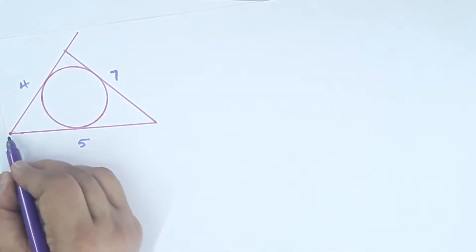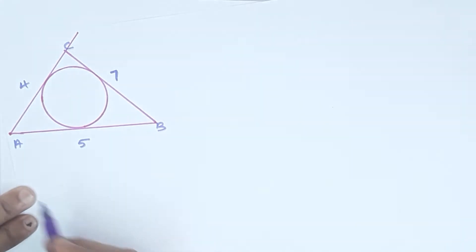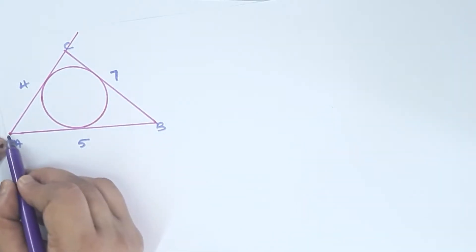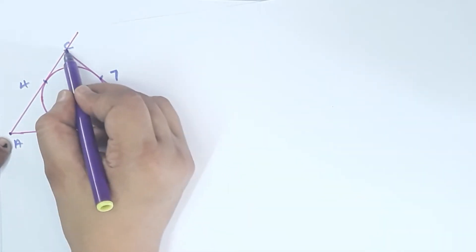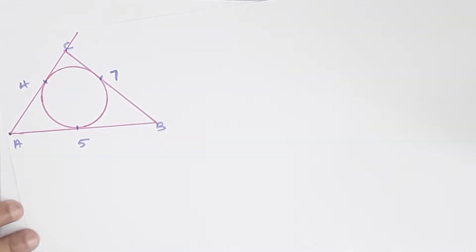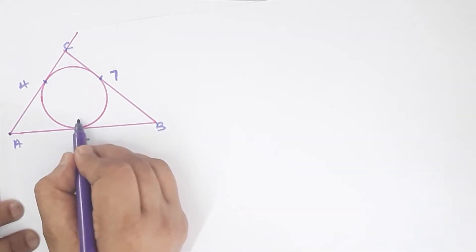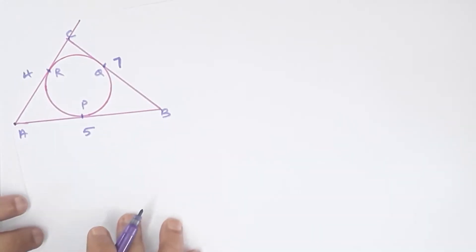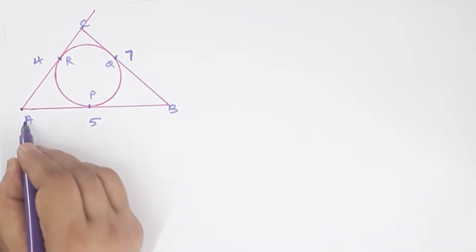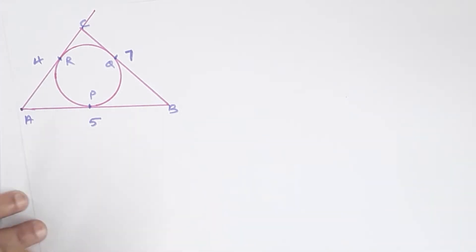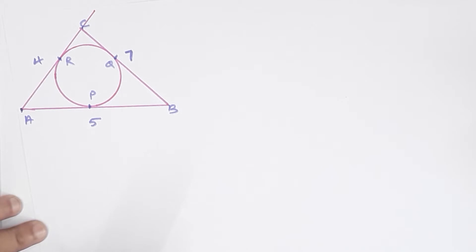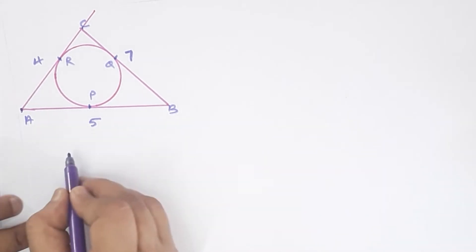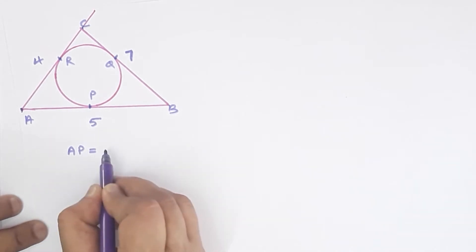We draw the triangle and mark its vertices. This is the triangle with the points of contact labeled. Let's say the vertices are P, Q, R and the external point is A. Since two tangents from an external point are equal, AP is equal to AR.